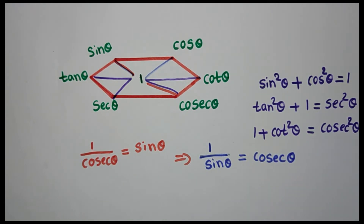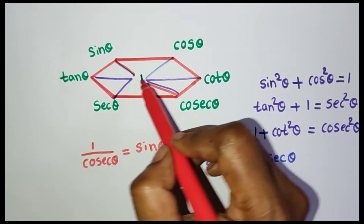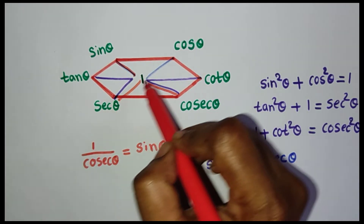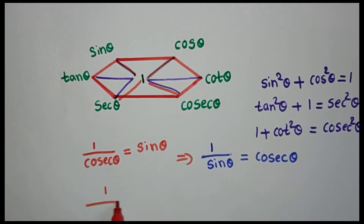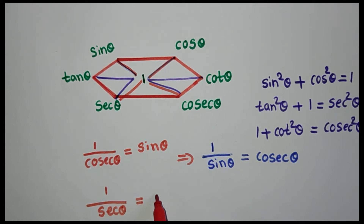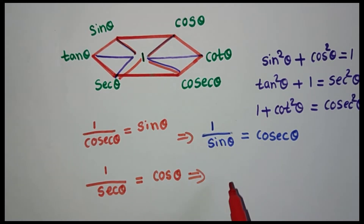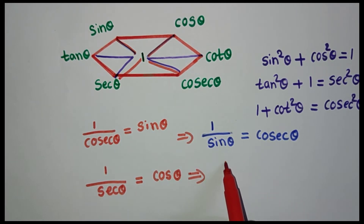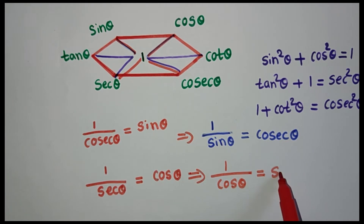The next formula: one divided by secant theta equals cos theta. In the same way, one divided by cos theta equals secant theta.